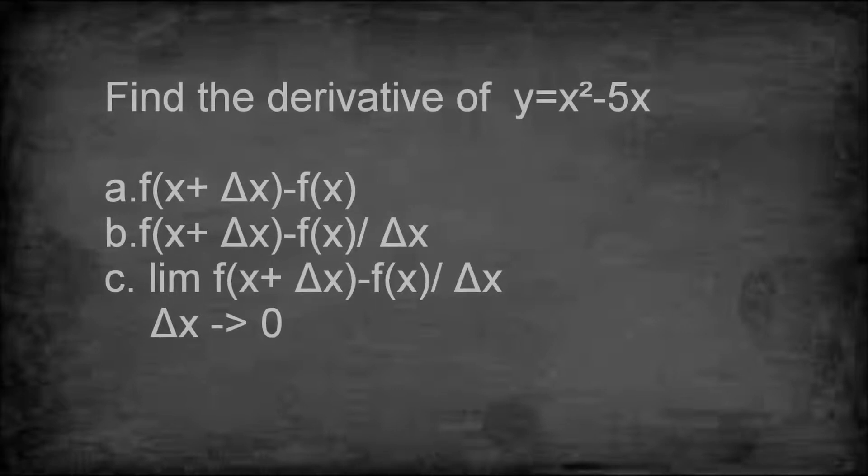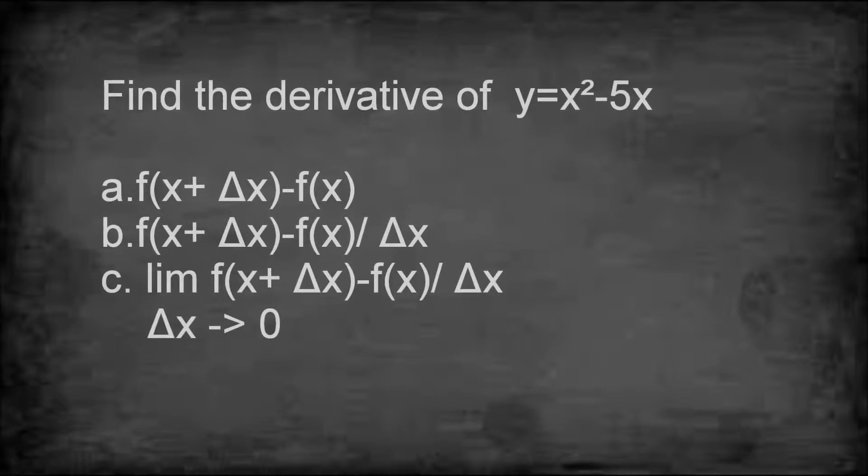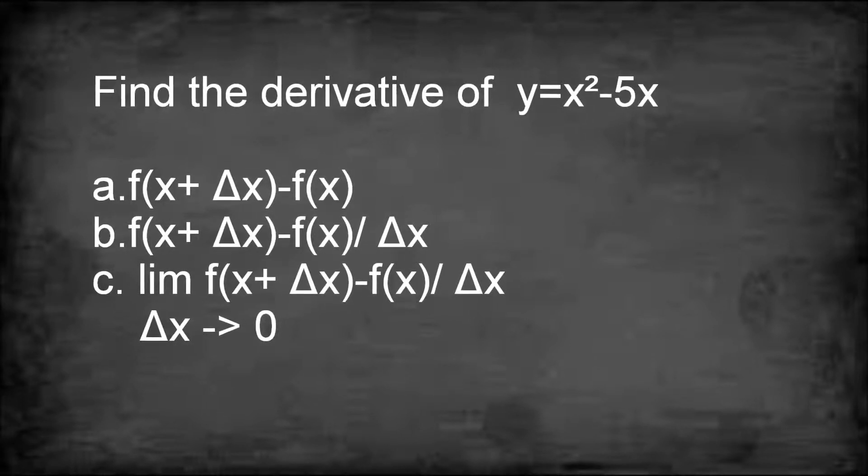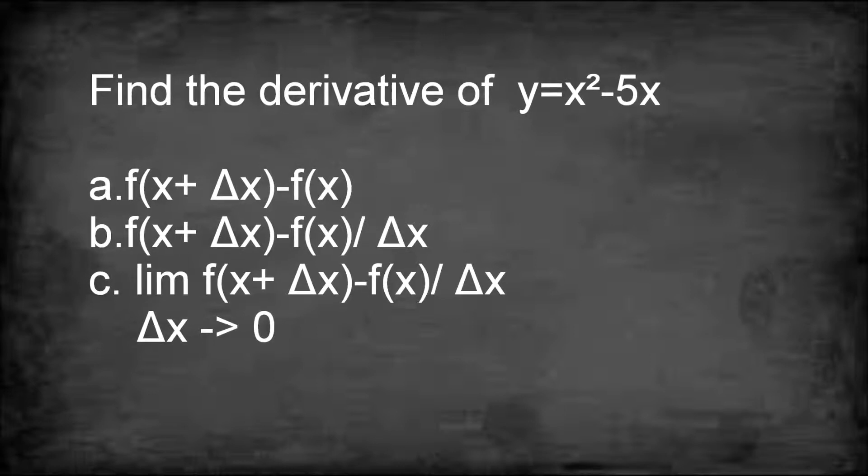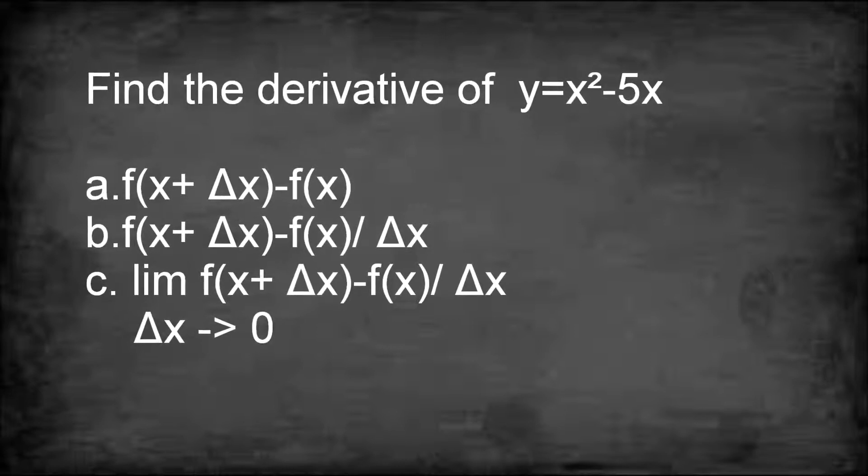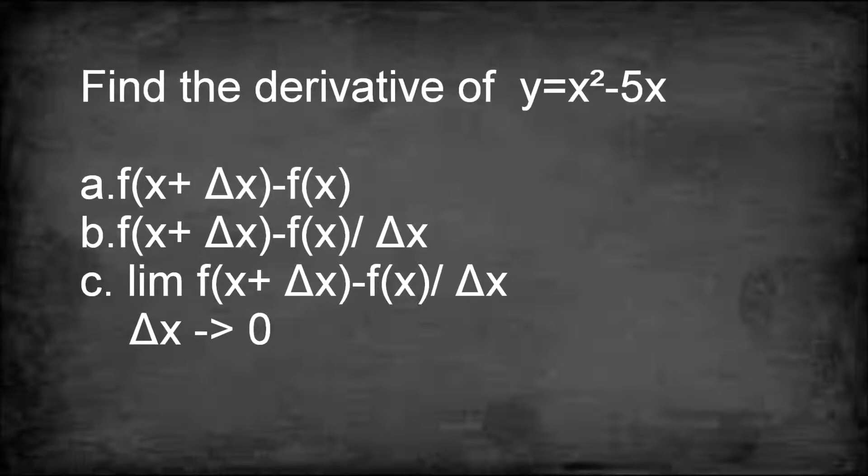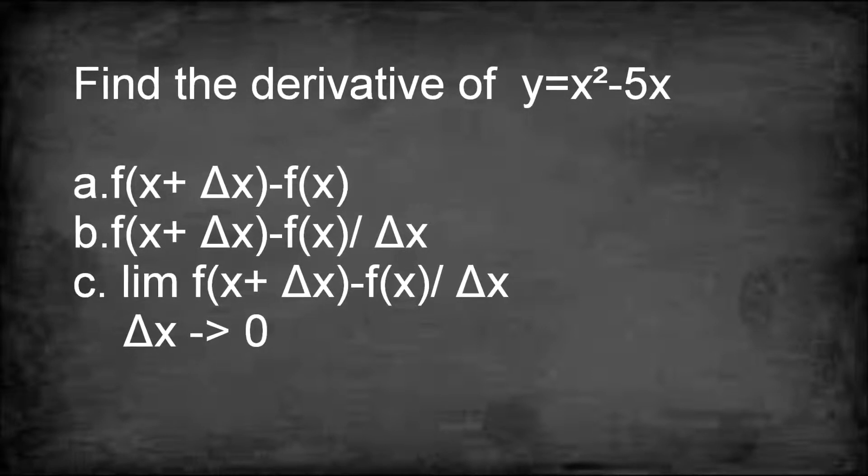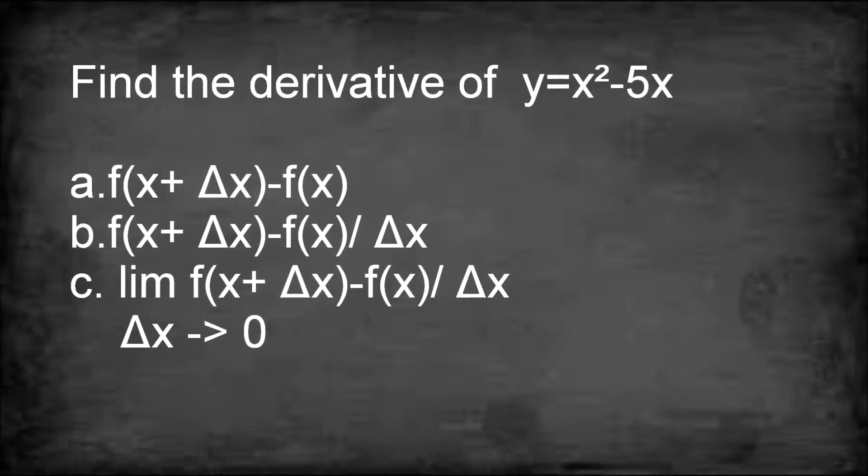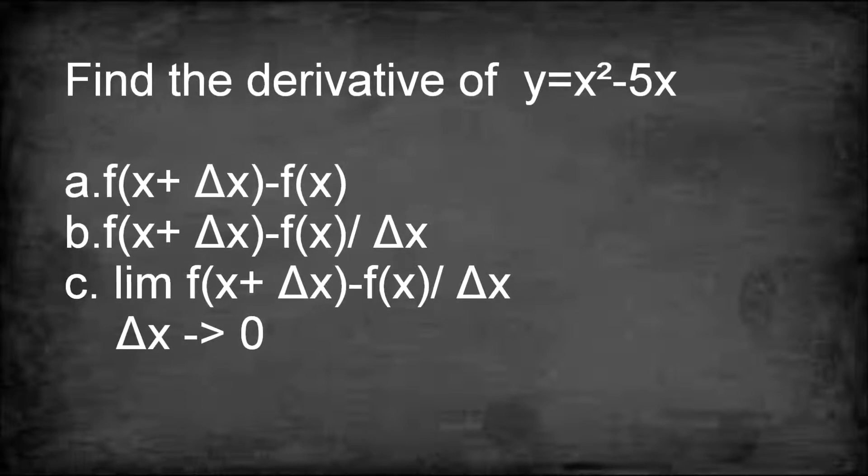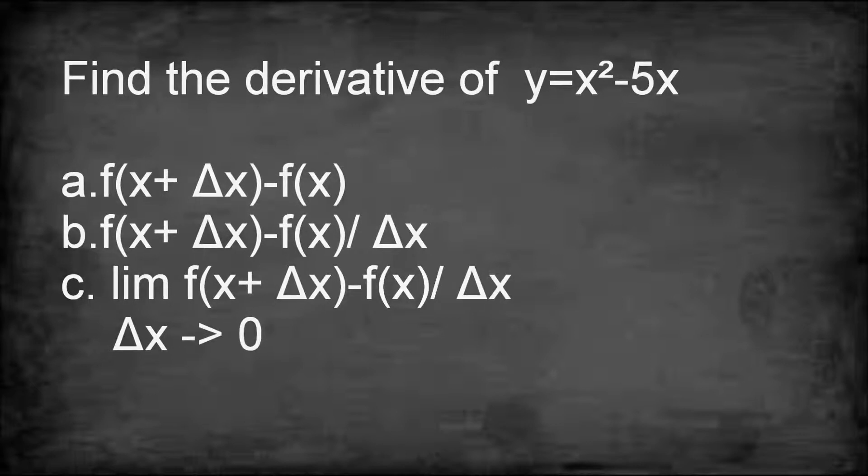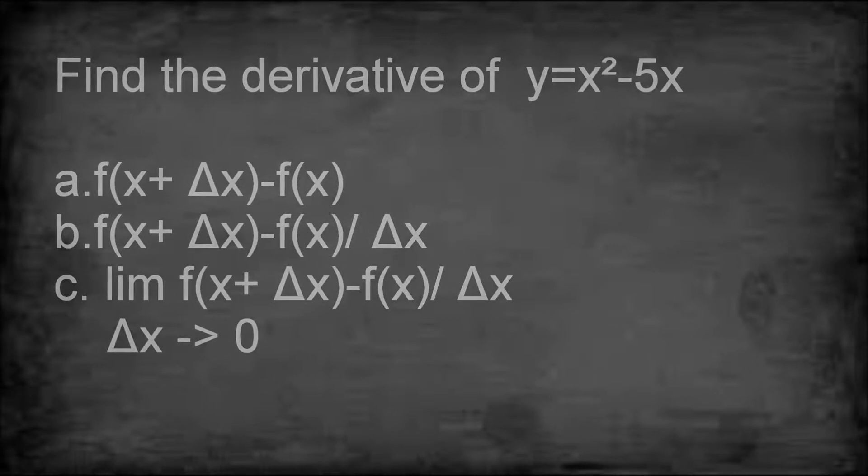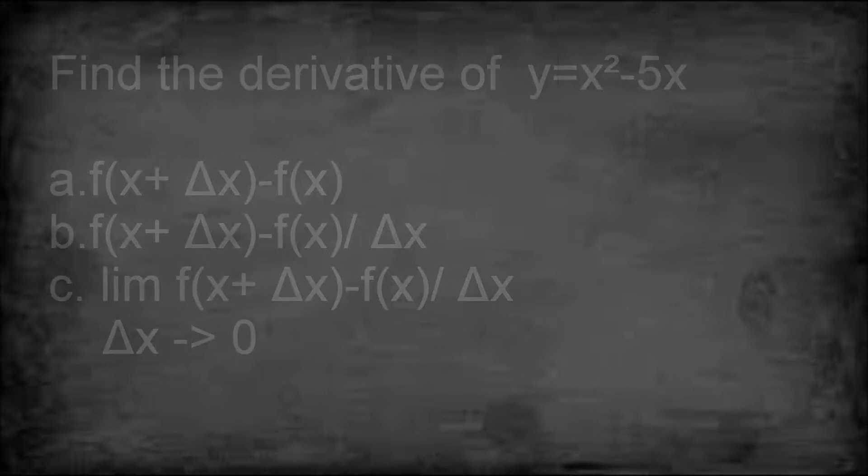Letter a: f of x plus delta x minus f of x. Letter b: f of x plus delta x minus f of x over delta x. And letter c: the limit of f of x plus delta x minus f of x over delta x as delta x approaches zero.